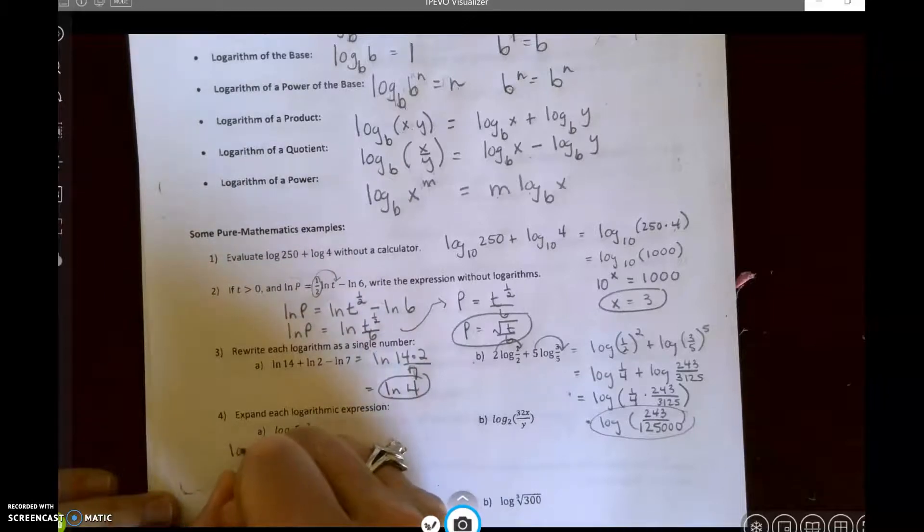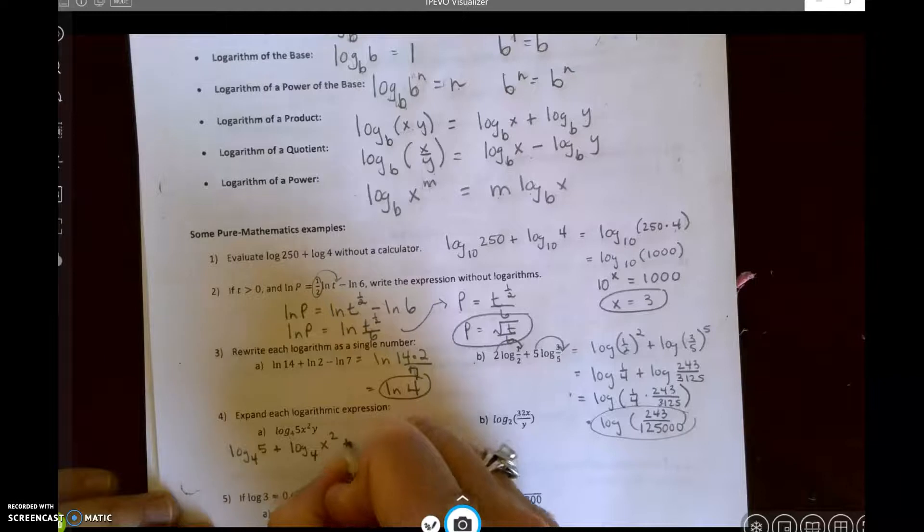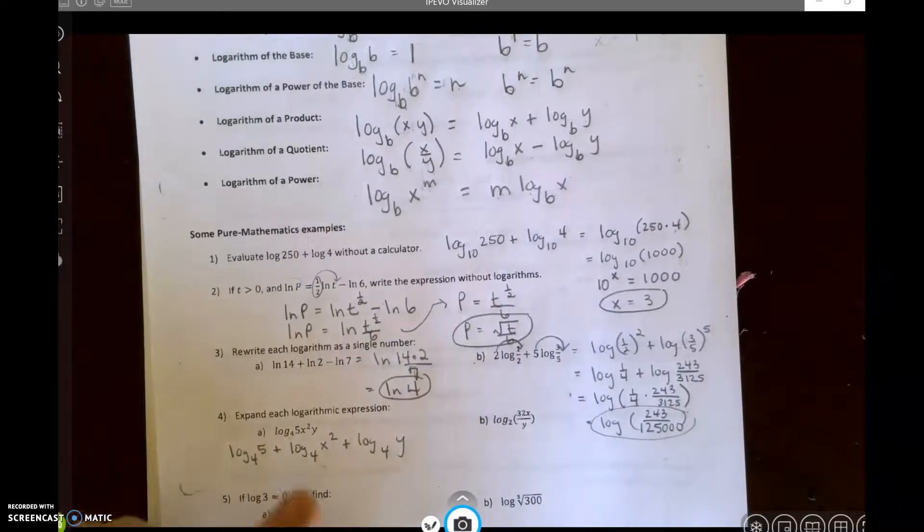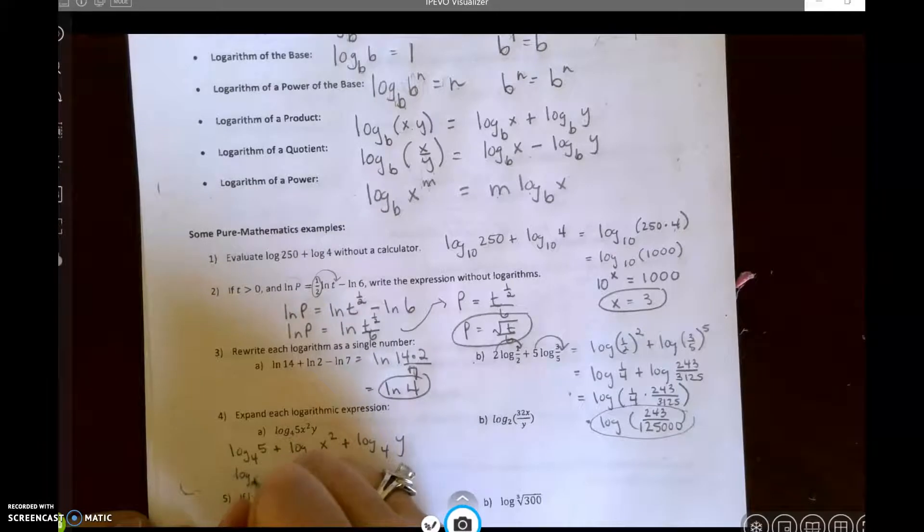So since this is log base 4 of 5x squared y, that means log base 4 of 5 plus log base 4 of x squared plus log base 4 of y. So because multiplication means addition. If I look, there's no exponent here, so I can just leave that one.